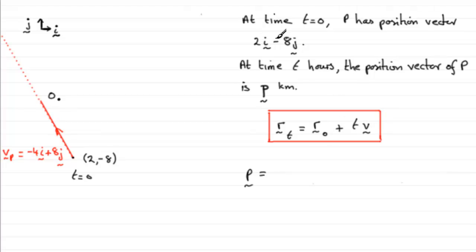which was this vector 2i minus 8j. So we can put that down as 2i minus 8j. And then it's plus t lots of the velocity vector. And the velocity vector was minus 4i plus 8j.